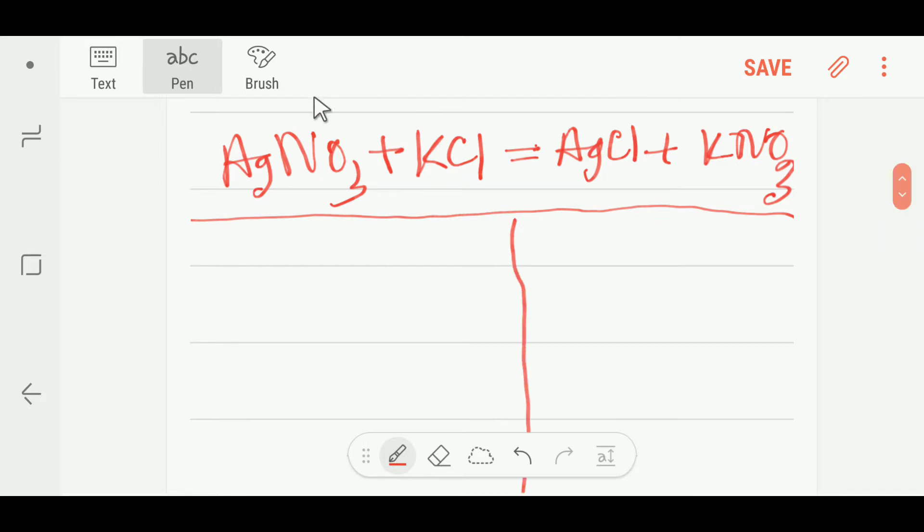Like this. This is silver, which is one. This is nitrate, which is one. This is potassium, which is one. This is chlorine, which is one. This is on the right-hand side.